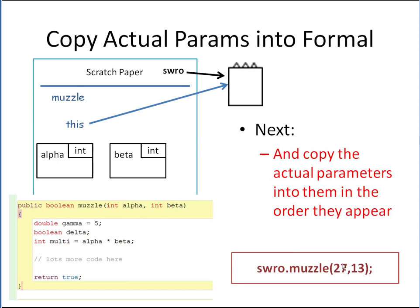Then we're going to look at the actual parameters — remember, the formal ones are the names, the actual ones are the things we're passing in, in the order they appear. We have 27 and 13, so we put 27 in the first box no matter what it's called, and 13 in the second box no matter what it's called. So 27 goes into alpha and 13 goes into beta.